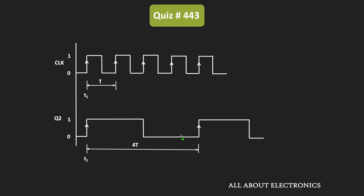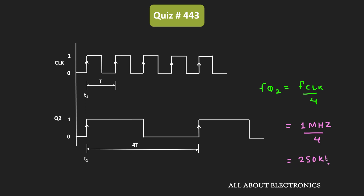Compared to the clock pulse, the time duration of Q2 is equal to 4T. In other words, the frequency of this Q2 output is equal to the clock frequency divided by 4, which gives 250 kHz.